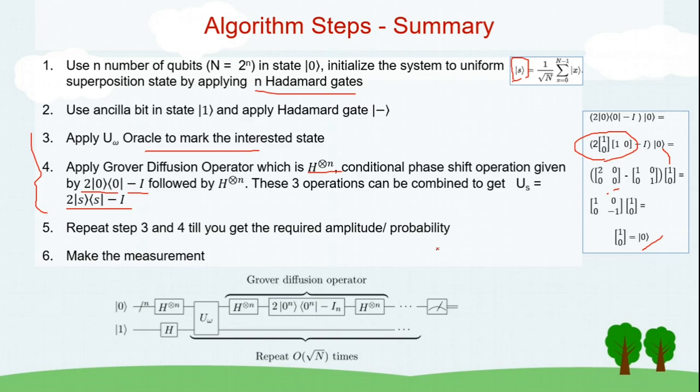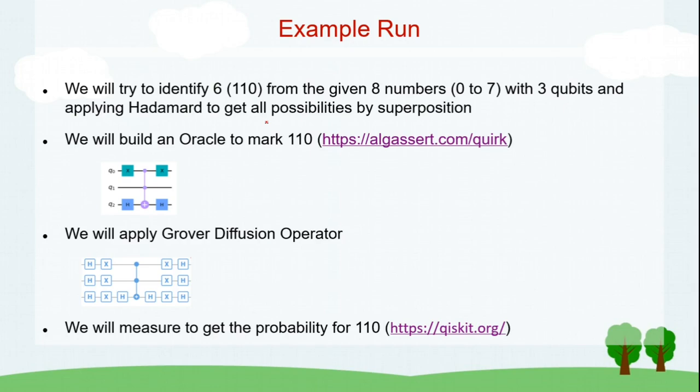And you have to repeat these two steps square root of n times maximum to get the required amplitude which will improve the probability. Finally you make the measurement to know the value. And this is again represented in circuit. We'll start with n number of qubits in state 0 apply Hadamard, take ancilla bit apply Hadamard then apply the oracle afterwards apply Grover's diffusion operator and then you may be repeating these two operations square root of n times and finally you make a measurement to get the answer.